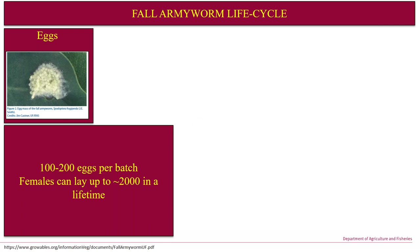There's a photo of eggs of the fall armyworm. They look a lot like many other moth eggs. They lay batches of about 1 to 200 eggs per batch, with females recorded as laying up to 2,000 in their lifetime.